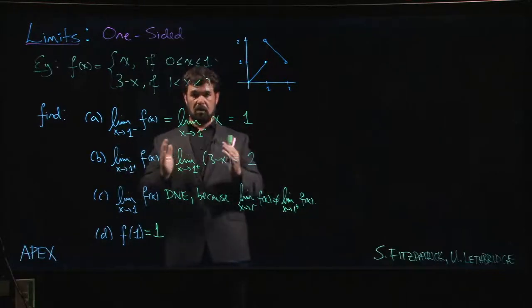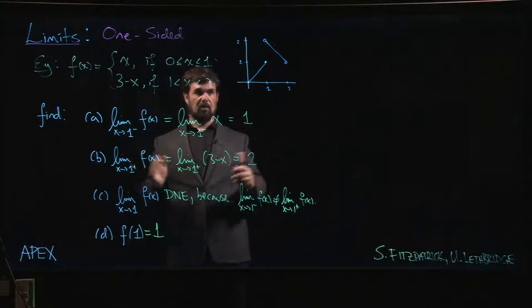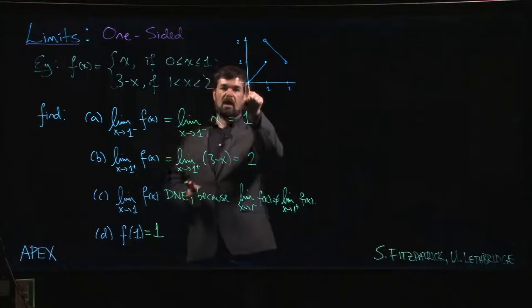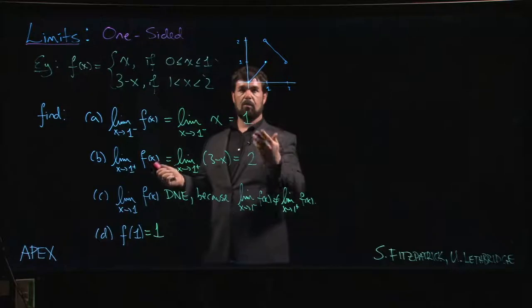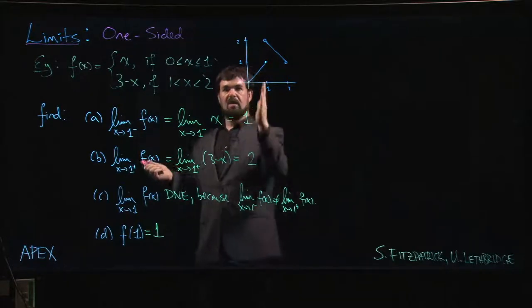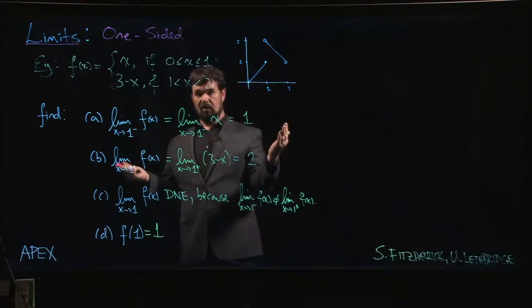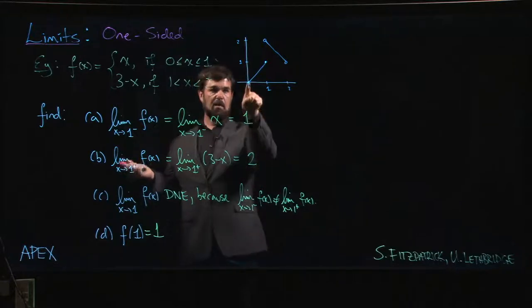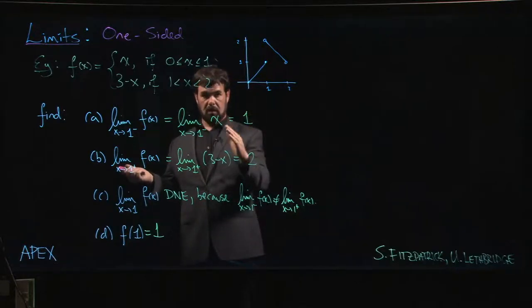And you want to see what's going on at the endpoints of your domain. We can't actually ask about the overall limit as x approaches 0 because f is not even defined when x is less than 0. So all we can talk about at 0 is the right hand limit; there is no left hand limit because f is not defined when x is less than 0.